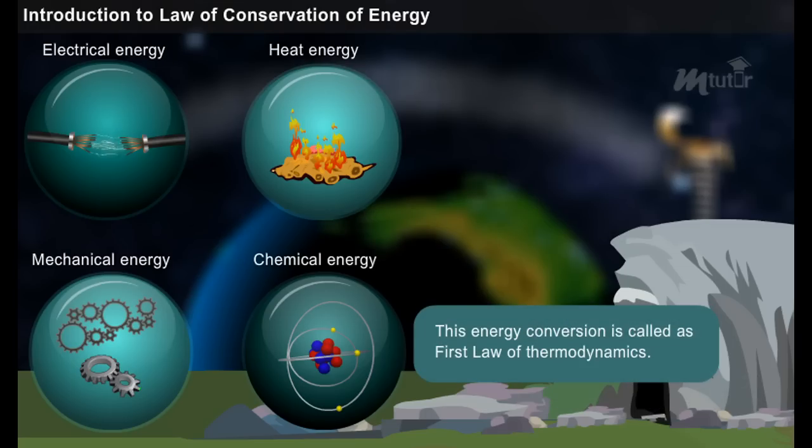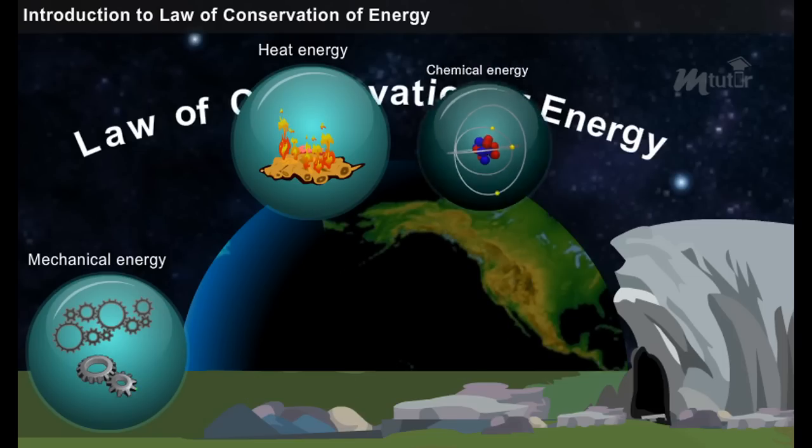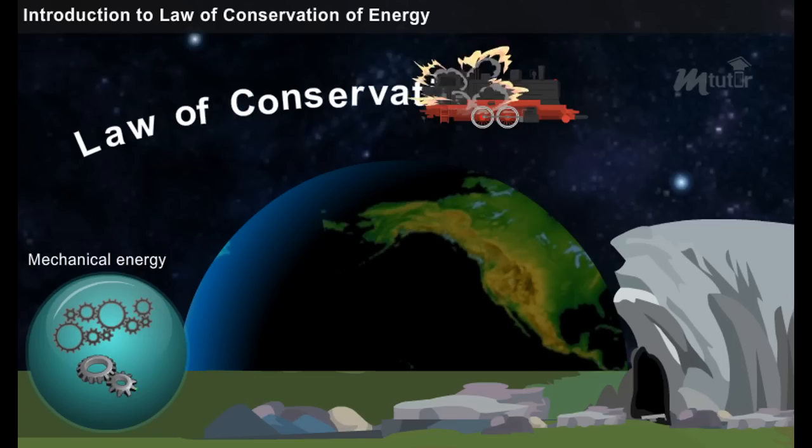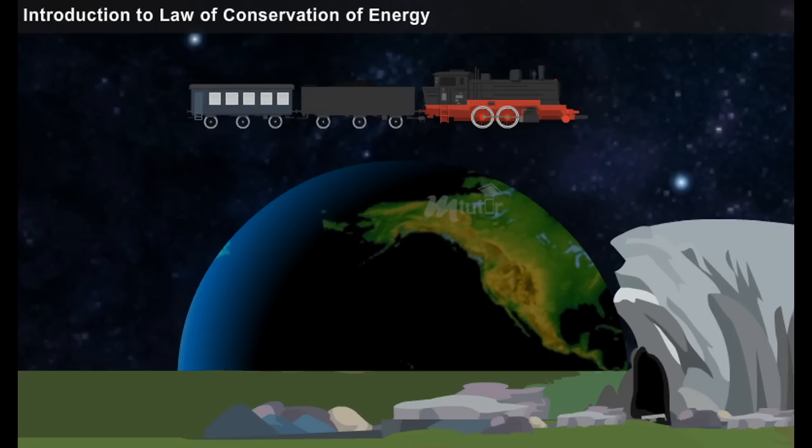This energy conversion is called the first law of thermodynamics. One best example for chemical, heat, and mechanical energy conversion can be found in the working principle of steam locomotive engine.